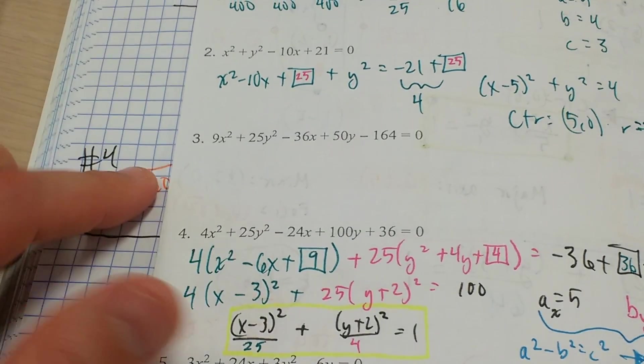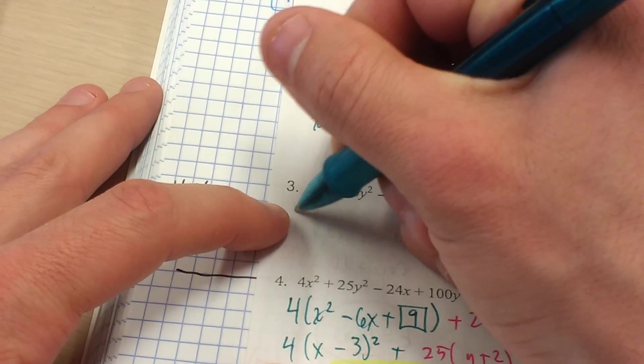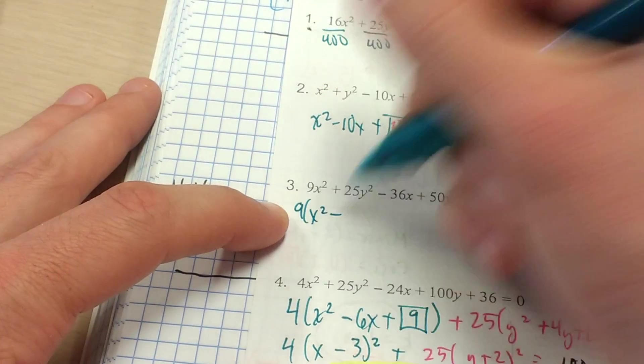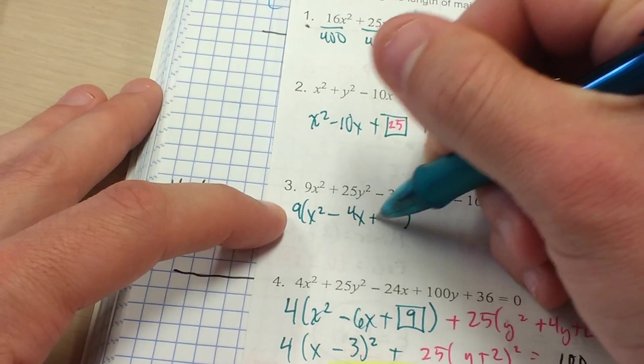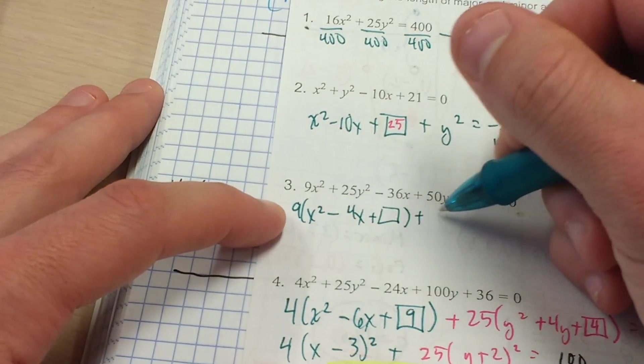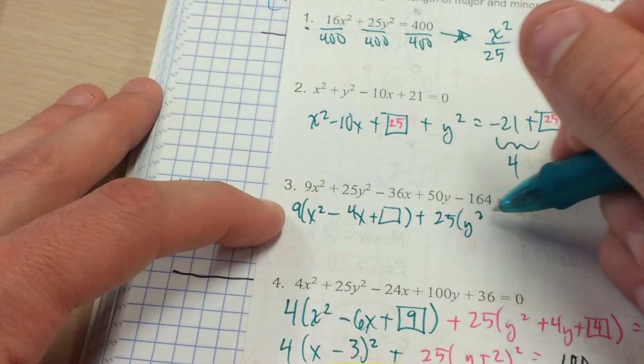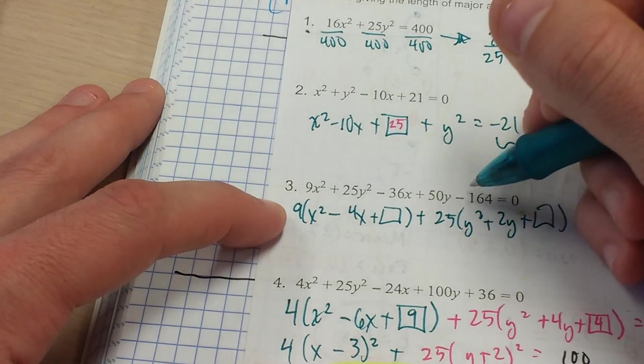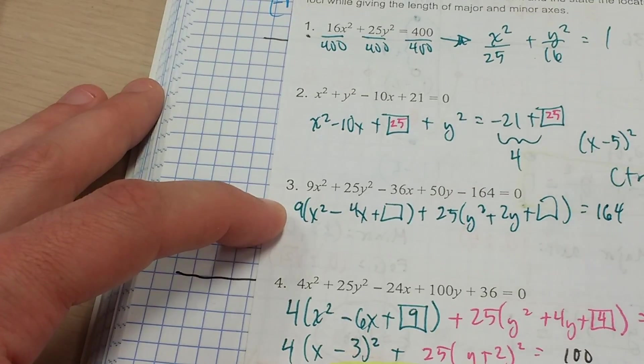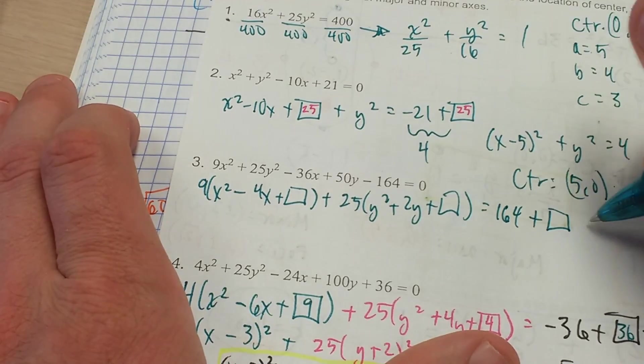Number 9 is another complete the square exercise. We'll factor out the 9x squared. We'll factor it out of the x term here, so that would be 4x, and we're going to add a number. We're going to factor out the 25y squared. Factor that out here. We've got plus 2y plus a number. And then we're going to move that 164 over. So that might be a pretty large number at the end of this. So we're going to add both of those numbers here.